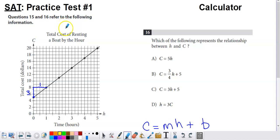Here's a practice SAT question. This graph represents the total cost of renting a boat by the hour. We've got the cost represented on the y-axis and the hours represented on the x-axis. Which of the following represents the relationship between h and c?